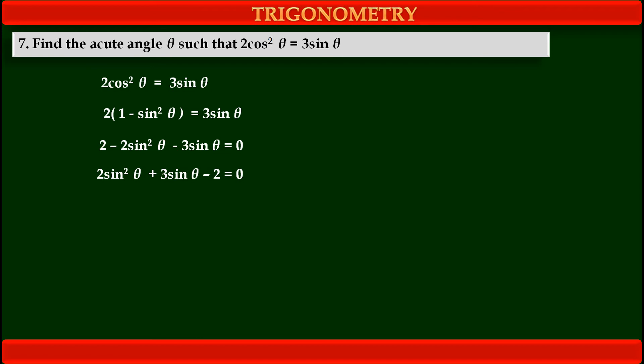So, we have to split the middle term. So, we get first term 2sin²θ as it is plus at the place of middle term, we have to write 2 terms 4sinθ - sinθ and last term -2 as it is equal to 0. Now, see here, middle term 4sinθ and -sinθ means 3sinθ. Their sum is 3 and their product 4 times 1 means -4 as the product of first and last coefficients.